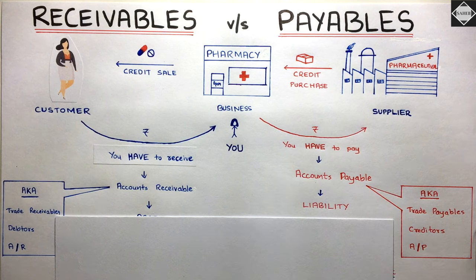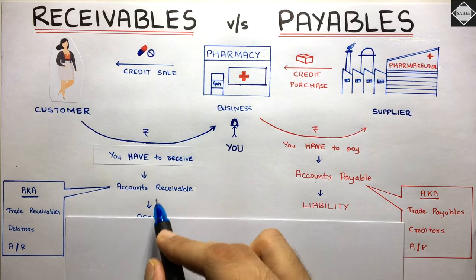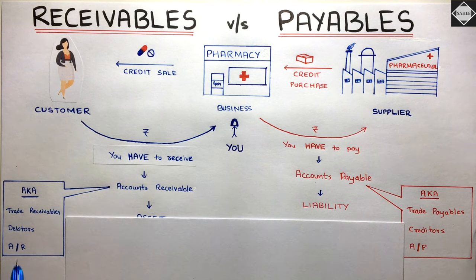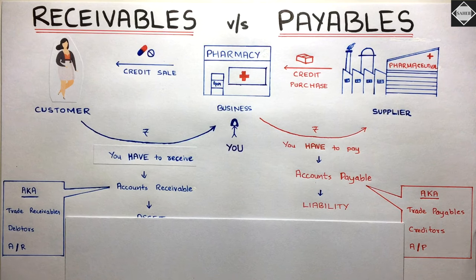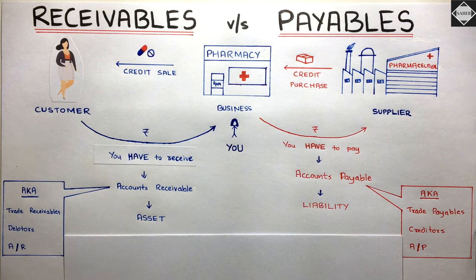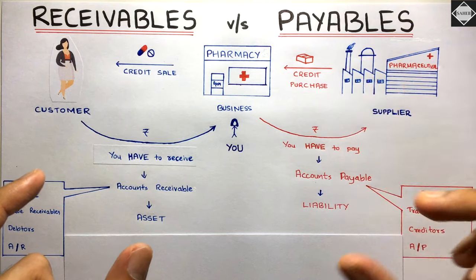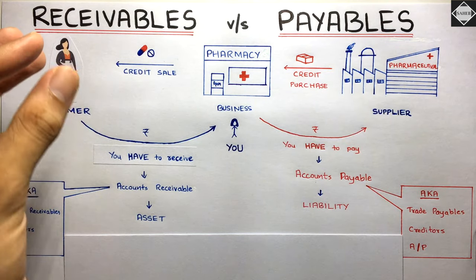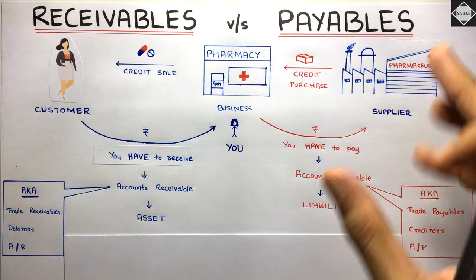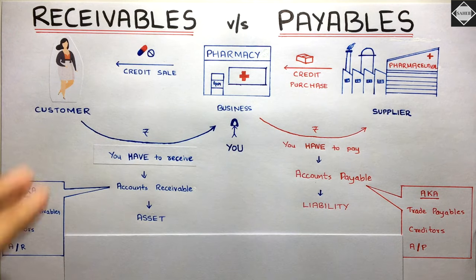To be exact, these are called accounts receivable and accounts payable. They also have different names: accounts receivable is also known as trade receivables, debtors, or just AR; and accounts payable is also known as trade payables, creditors, or AP. Accounts receivable is an asset because there is a future economic benefit. Accounts payable is a liability because you have a present financial obligation. In the balance sheet, accounts receivable is a current asset and accounts payable is a current liability, because both are settled within 12 months.